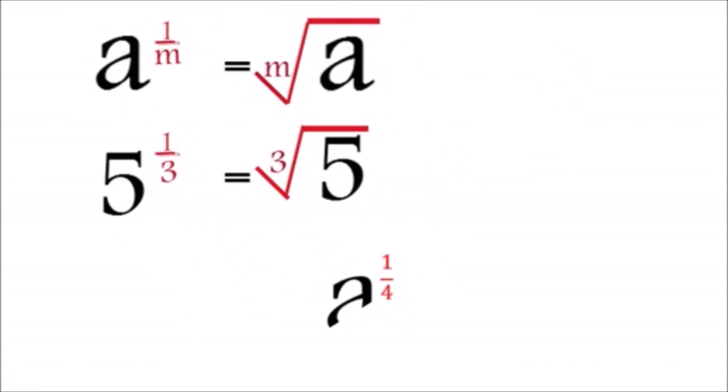Again, a exponent 1 over 4 equals the 4th root of a. Notice how the 4 became the 4th root.